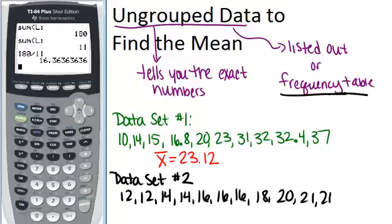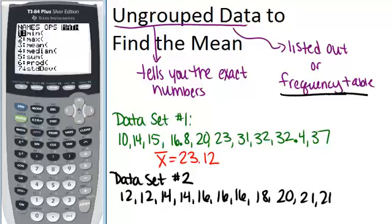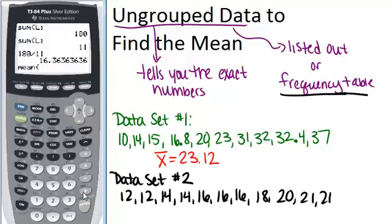What you do is go into 2nd stat so that you're in list, scroll over to math, and scroll down to mean, and then we want to find the mean of list 1 comma list 2. When we do that, we see that we get the same exact mean. So that's another way that you could figure out the mean with your calculator if you have your data in a frequency table situation.